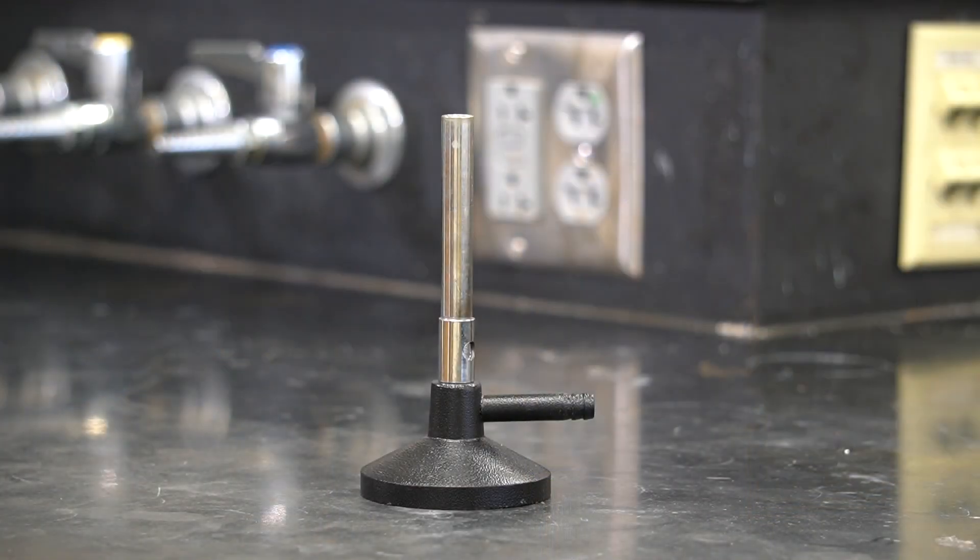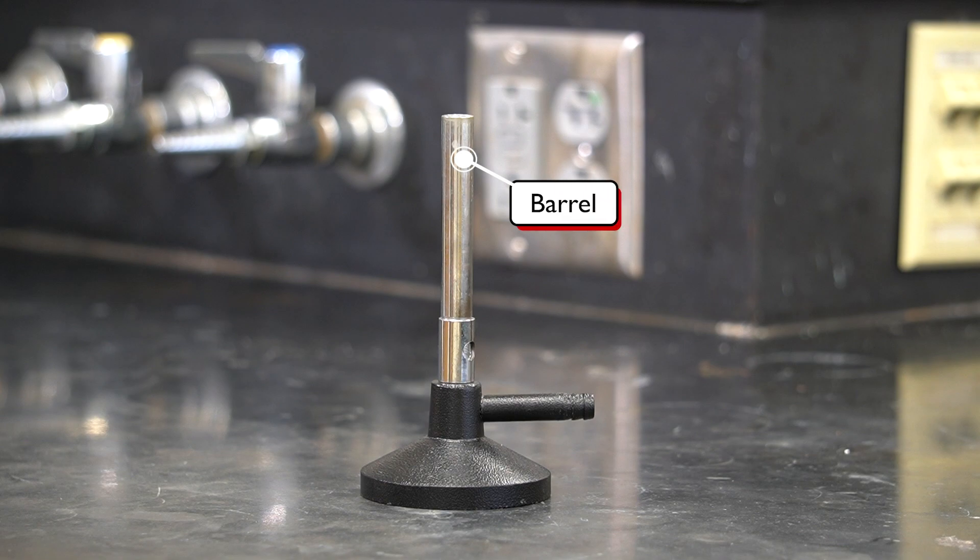Before we start assembling, let's first take a closer look at the Bunsen burner. Starting from the top, this tubing is called the barrel. This is where the flame will be produced.